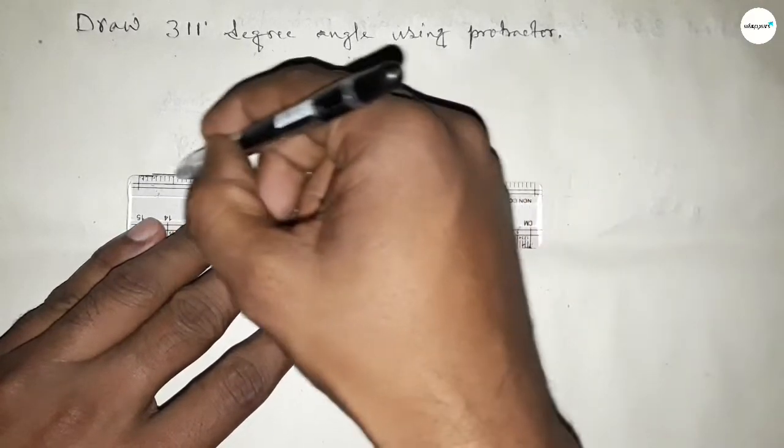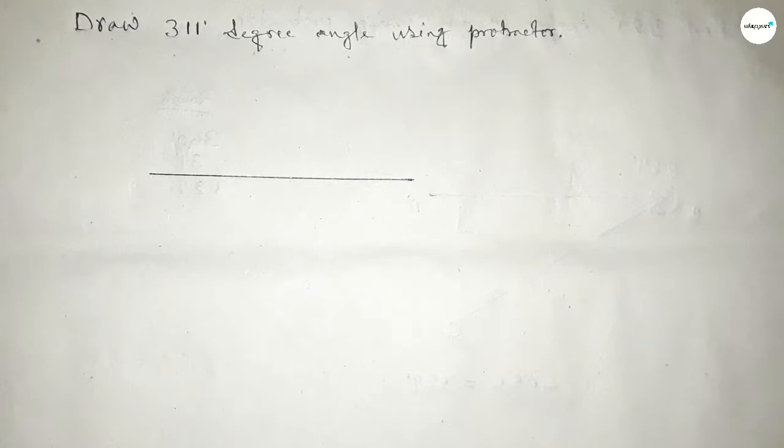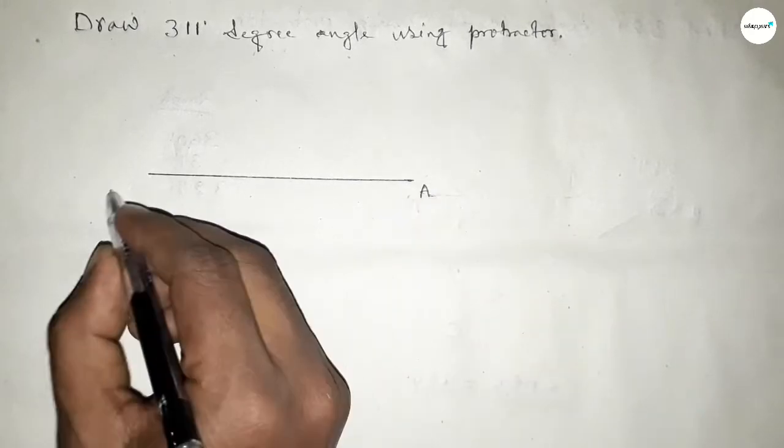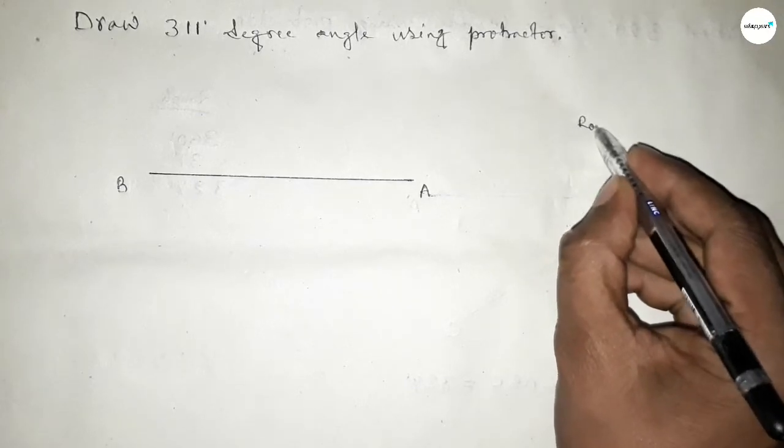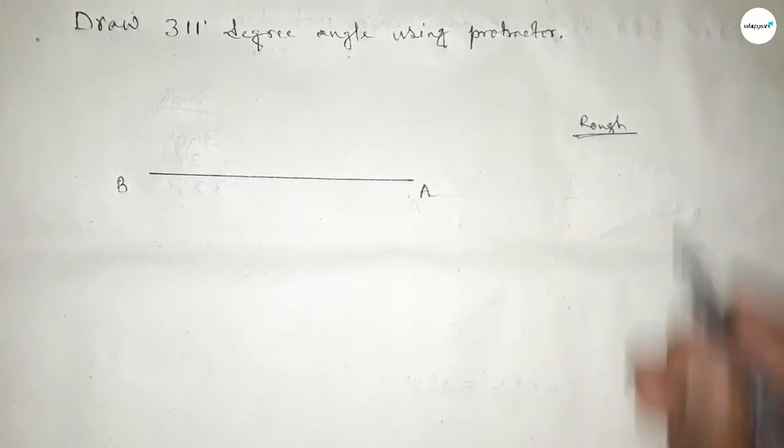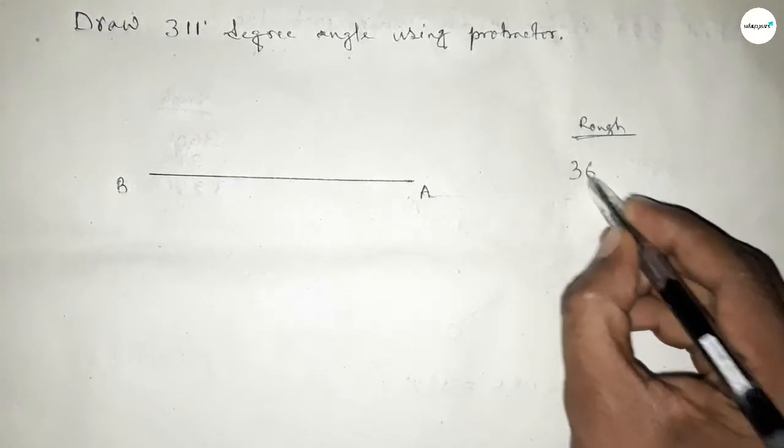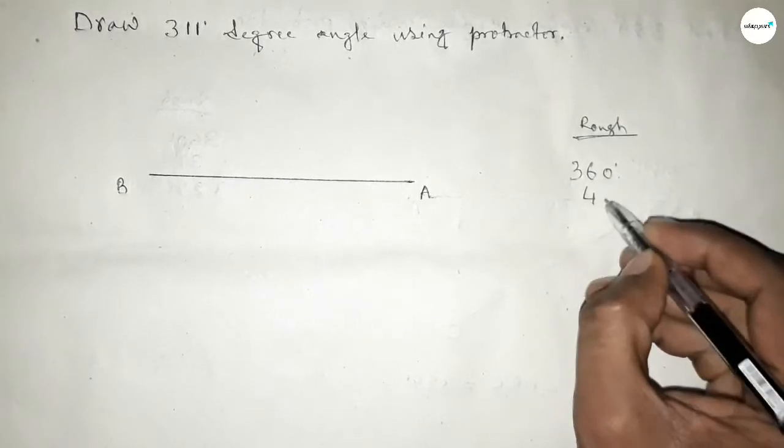First draw a line. Next, taking this end as point A and this end as point B. Now roughly discussing some important calculation here. So if we subtract 49 degree angle from 360 degree, then we can get 311 degree.